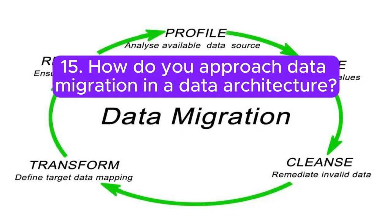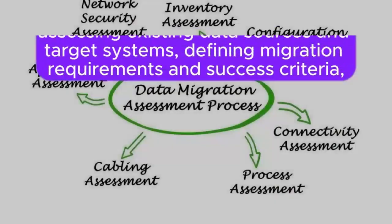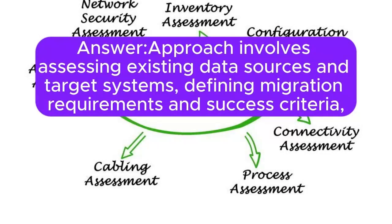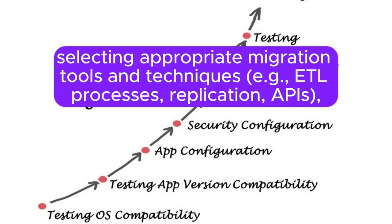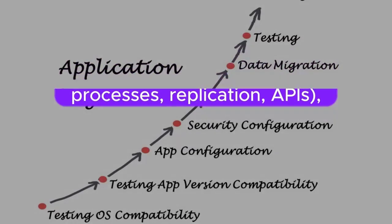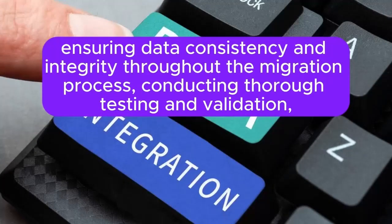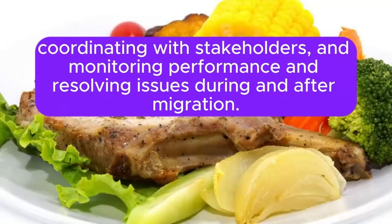Question 15: How do you approach data migration in a data architecture? The approach involves assessing existing data sources and target systems, defining migration requirements and success criteria, selecting appropriate migration tools and techniques such as ETL processes, replication, or APIs, ensuring data consistency and integrity throughout the migration process, conducting thorough testing and validation, and coordinating with stakeholders while monitoring performance and resolving issues during and after migration.